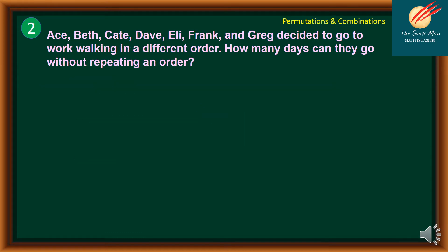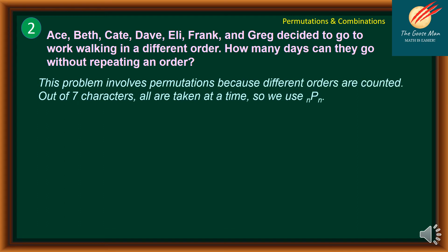Let's move on to problem number 2. Ace, Beth, Kate, Dave, Ellie, Frank, and Greg decided to go walking in a different order. How many ways can they go without repeating an order? Since this problem involves permutations because different orders are counted, out of 7 characters, all are taken at a time.